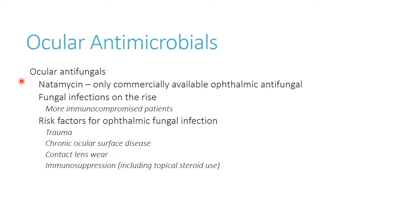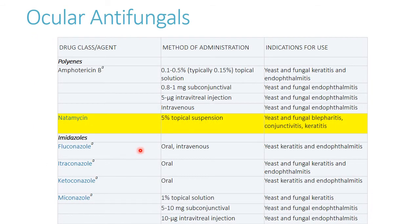There are also a few antifungal meds available. You usually don't see a lot of fungal eye infections — mostly in immunocompromised patients. Natamycin is going to be the only commercially available topical antifungal option. Be aware that systemic drugs like amphotericin B and the azoles can also be used to treat eye infections. Risk factors for fungal infection include preceding trauma, chronic ocular surface disease, and contact lens wear. As we get more immunocompromised patients, we'll see more fungal infections.